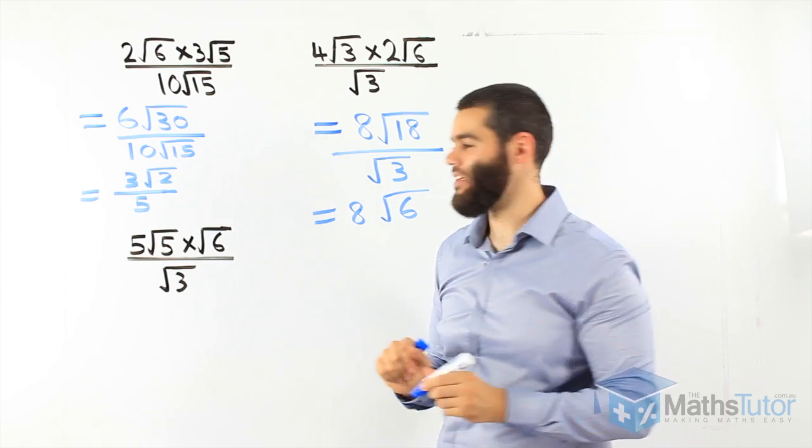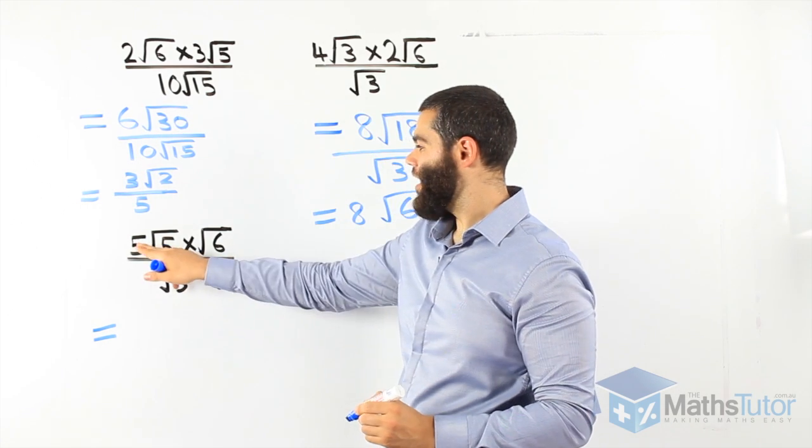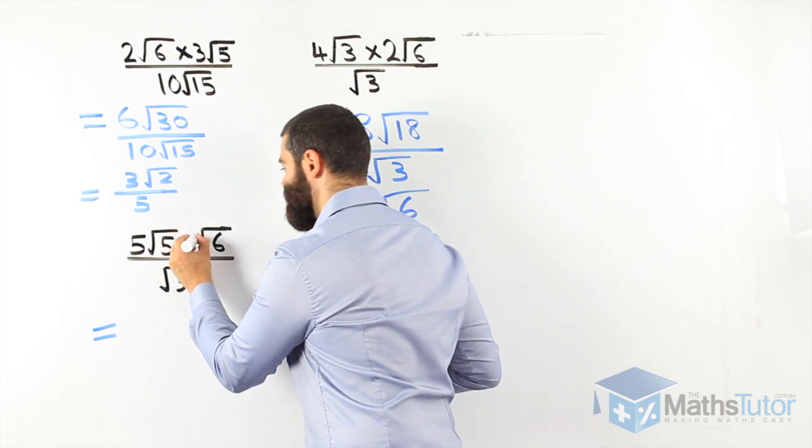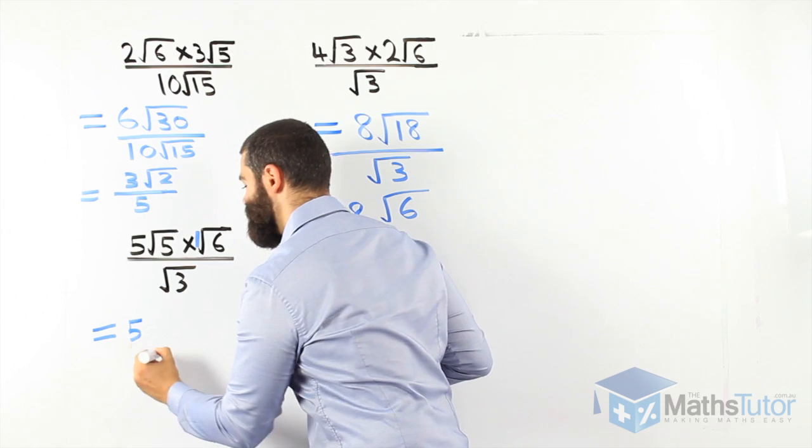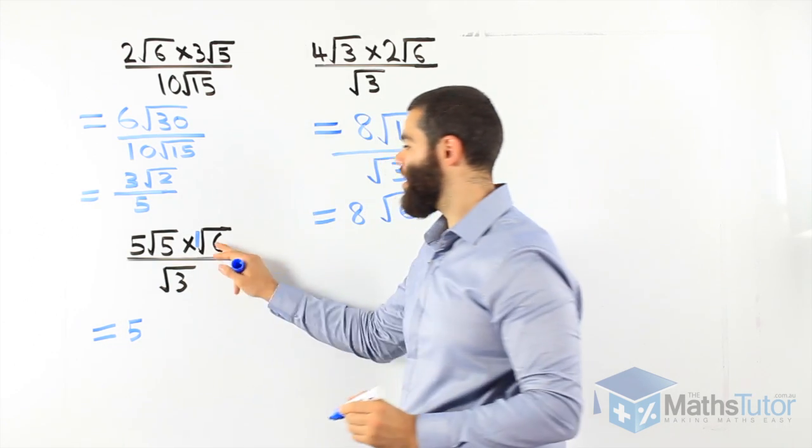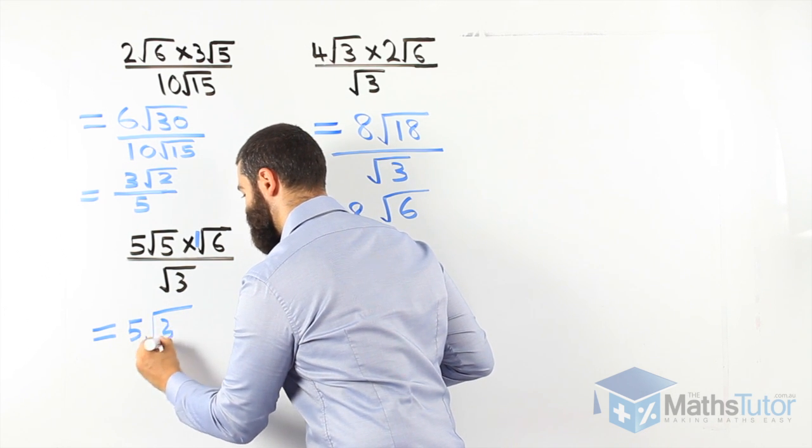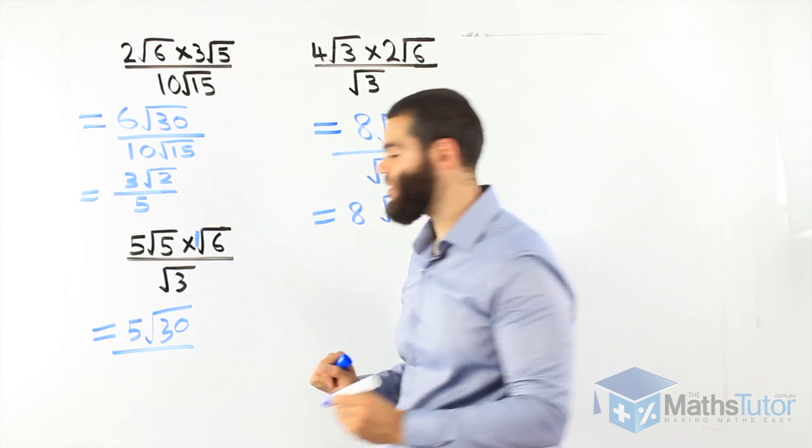Again, we follow the same process. 5 times what's there? There's an invisible one. There's an invisible one right there. So 5 times 1 is 5. Root 5 times root 6. 5 times 6 is 30. All over. We're going to divide it by root 3 if we can.